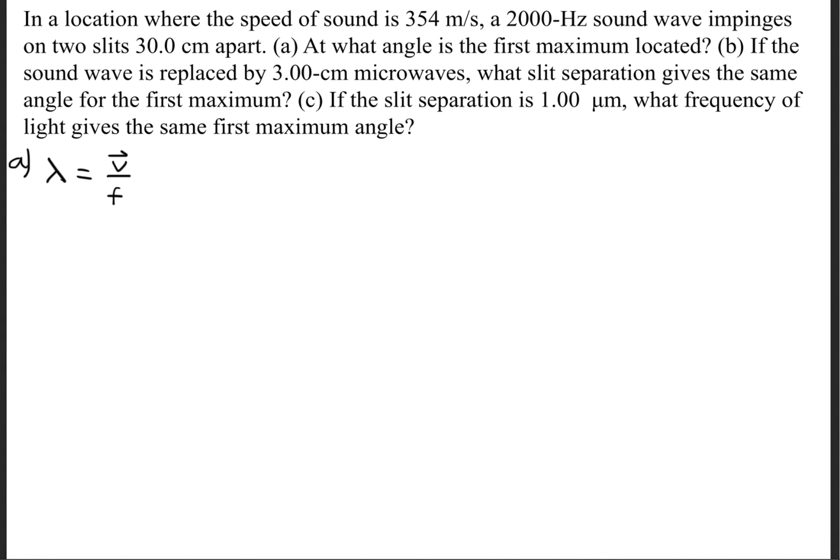Let's begin part A. We need to use either the constructive interference formula, d·sinθ = m·λ, or the destructive interference formula, d·sinθ = (m + ½)·λ. However, we don't have a wavelength, so we need to take the given velocity and frequency and find the wavelength. When we do that, we get a wavelength of 0.177 meters.